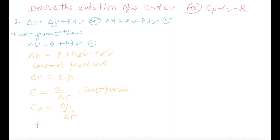From here what I will get: Qp is equal to Cp delta T and Qp is equal to what? Delta H. So delta H is equal to Cp delta T.